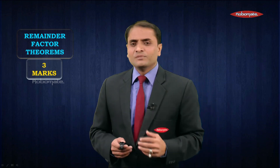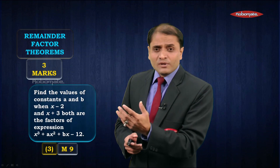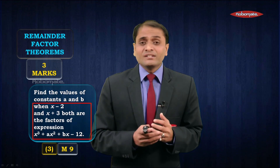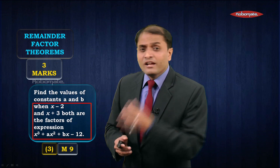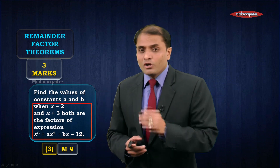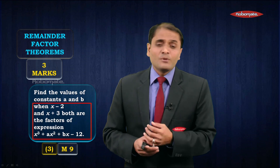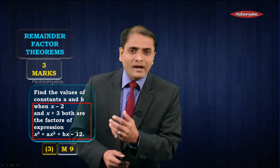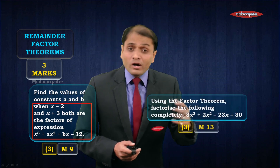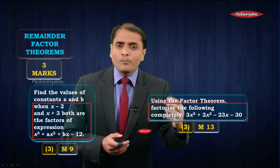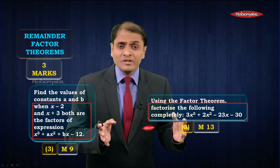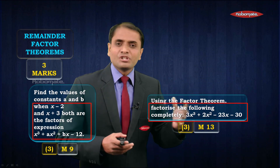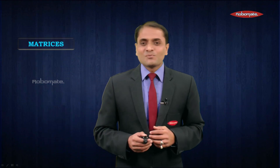Next is remainder and factor theorem — a very simple chapter. One three-mark question is definite from this chapter. Either they give us certain factors of a polynomial and ask us to find the values of unknowns a and b — for example, if x minus 2 and x plus 3 are factors, use the factor theorem to find a and b. Or another important type of question is they give you a polynomial and ask you to factorize it completely, meaning find all its possible factors. Refer to module 13 for its solution.